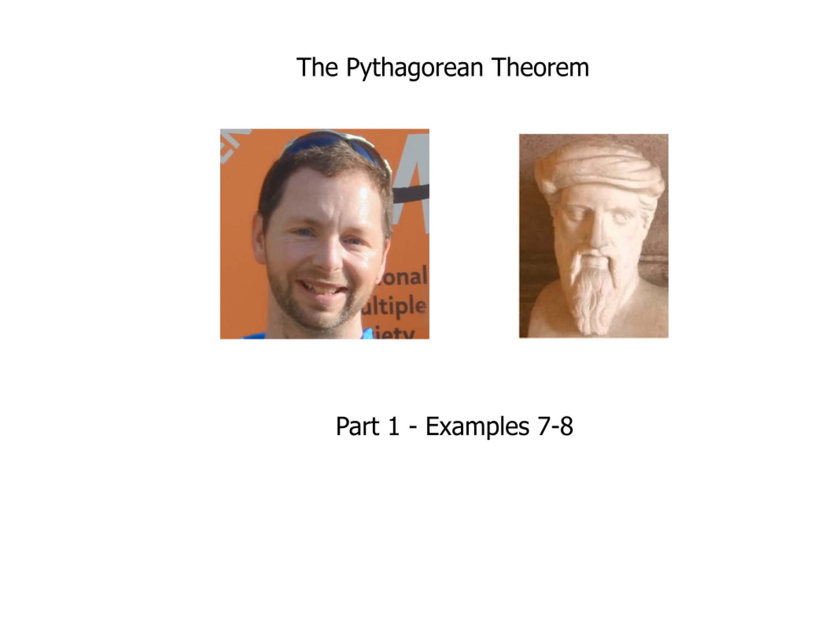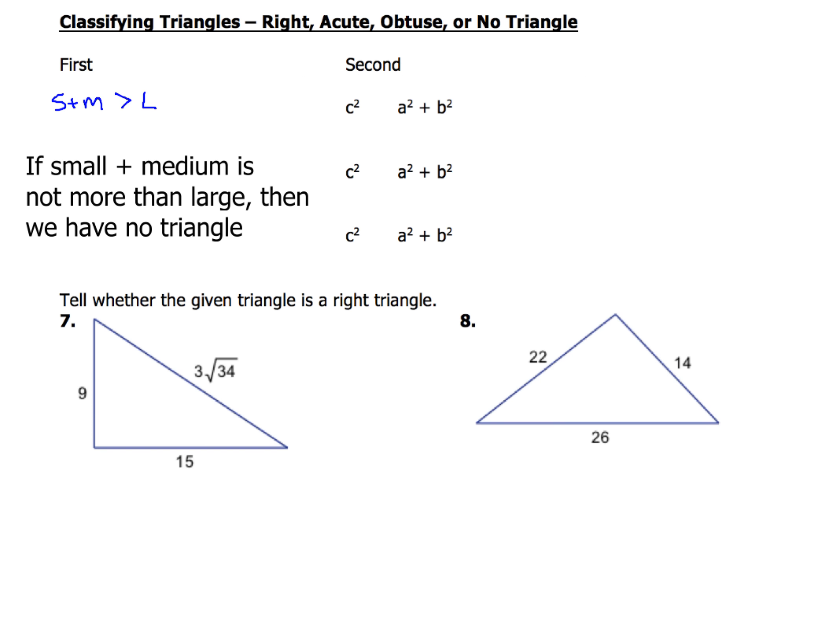Now before we get into these examples, we've got some rules we've got to go over, because math's got a lot of rules. Sometimes you're going to be asked to classify triangles, is it a triangle right, is it acute or is it obtuse? But we've got to remember this other piece about no triangles.